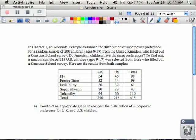Okay, so way back when in Chapter 1, an alternate example examined the distribution of superpower preferences. You guys remember that? Of a random sample of 200 children from 9 to 17 in the U.K. who filled out a survey, and do American children have these same preferences? So guess what? They did one with 250 children in the U.S. ages 9 to 17, and they filled out a census thing, and here are the results. So again, we have row totals, we have column totals, and we have a table total, and we're always...